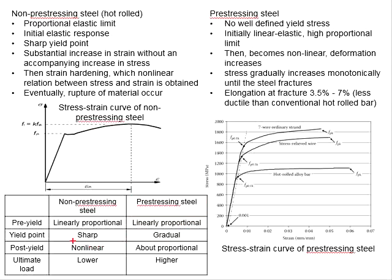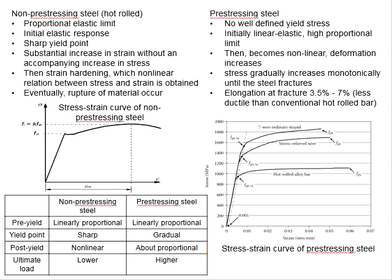You will see a non-linear response after yielding. However, the response of the prestressing steel is above proportional. In terms of ultimate load, the non-prestressing steel is lower than the prestressing steel.